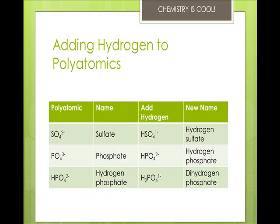When you add hydrogen ions — remember, hydrogen ions are a +1 charge — they attach to other polyatomic ions and change the charge by one. So if you have SO₄²−, you add a hydrogen and it becomes a 1−, hydrogen sulfate. The phosphate ion, when you add one hydrogen, becomes 2− and it's hydrogen phosphate. Then you add another hydrogen to get H₂PO₄ 1−, dihydrogen phosphate, which, by the way, goes into baking soda.